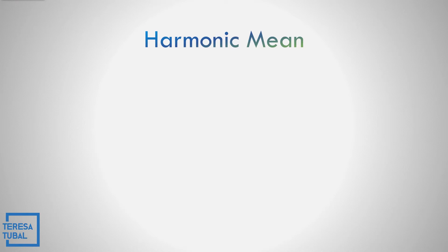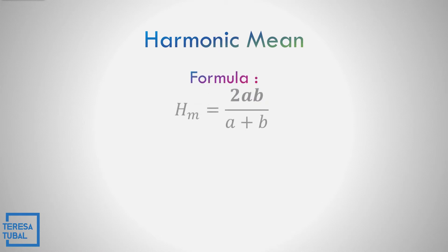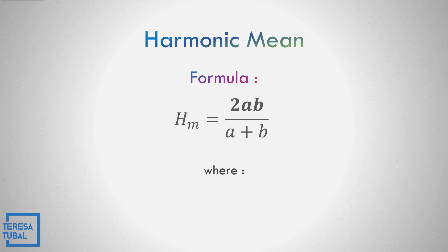What if the mean is unknown? How do we identify the mean of the harmonic sequence? The formula is: harmonic mean is equal to 2AB all over A plus B, where A is considered as the first term and B is considered as the last term. Let us apply how to use the harmonic mean formula.